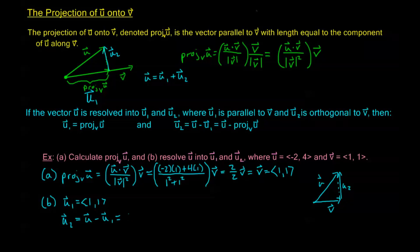So here's my u₂ vector. u₂ is just u, which is ⟨-2, 4⟩, minus u₁, which we found to be ⟨1, 1⟩. So we're going to get that u₂ is ⟨-3, 3⟩. That's -2 minus 1, and 4 minus 1. And we're done.